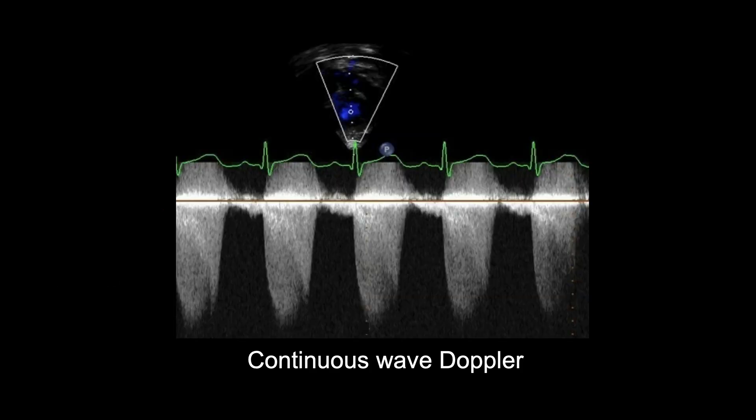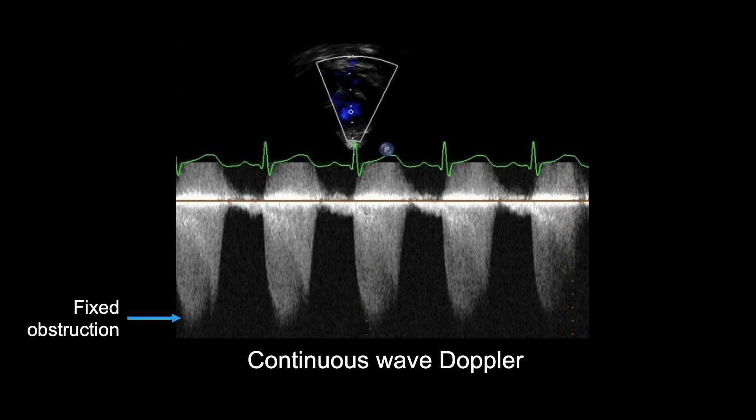Here is another example showing that the Doppler trace in Tetralogy of Fallot appears as a double envelope, reflecting both dynamic obstruction of the right ventricular outflow tract shown by the dagger-shaped trace, and fixed obstruction shown by the parabolic-shaped systolic contour.